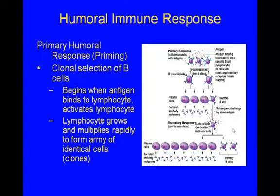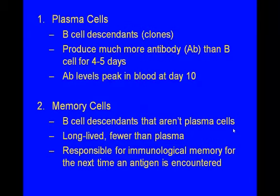Humoral immune response — if it's humoral, then we're talking about B cells. Here you have the clonal selection of B cells. This begins when an antigen binds to a lymphocyte, activating it. The lymphocyte grows and multiplies rapidly to form an army of identical clones. Plasma cells are B cell descendants — these are the clones the B cells are making. They produce many more antibodies than B cells for four to five days, and antibody levels will peak in the bloodstream at about day 10.